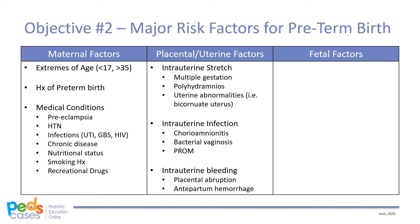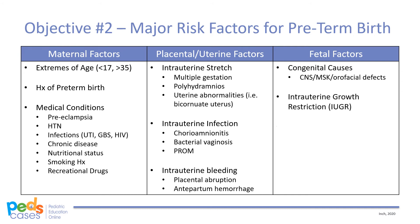The final category is fetal factors, referring to congenital or growth-related factors of the fetus that may lead to preterm birth. Congenital causes primarily refer to central nervous system defects, but may also include orofacial or musculoskeletal defects. Another fetal factor may be intrauterine growth restriction. Lastly, fetal distress, which is typically caused by oxygen deprivation of some etiology, can lead to preterm birth.